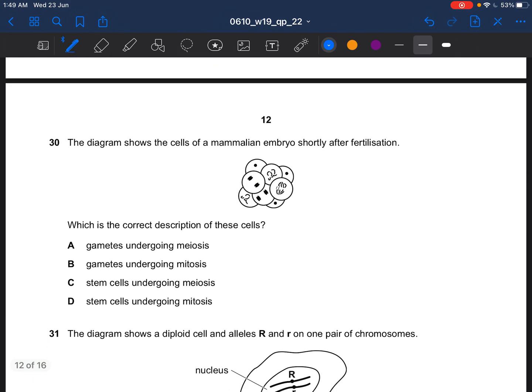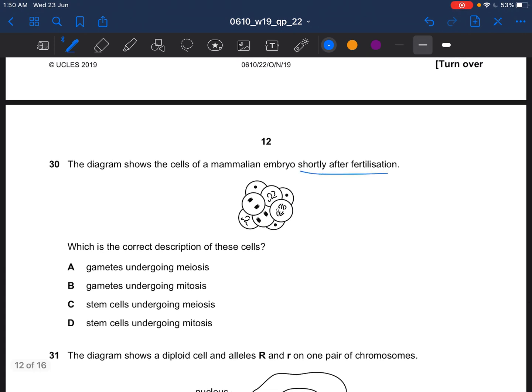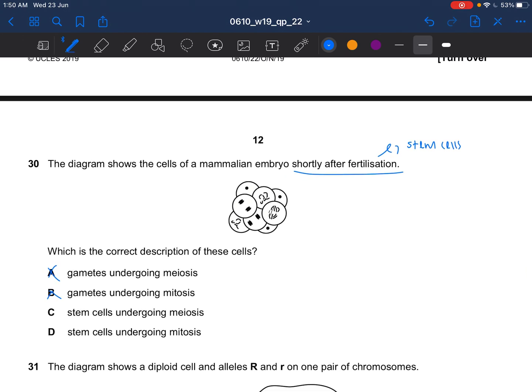Next question, the diagram shows the cells of a mammalian embryo shortly after fertilization. What is the correct description of these cells? Shortly after fertilization, stem cells would be produced. Stem cells are unspecialized cells that would divide to produce daughter cells that can become specialized for specific functions. Stem cells divide by mitosis. So the answer would be D.